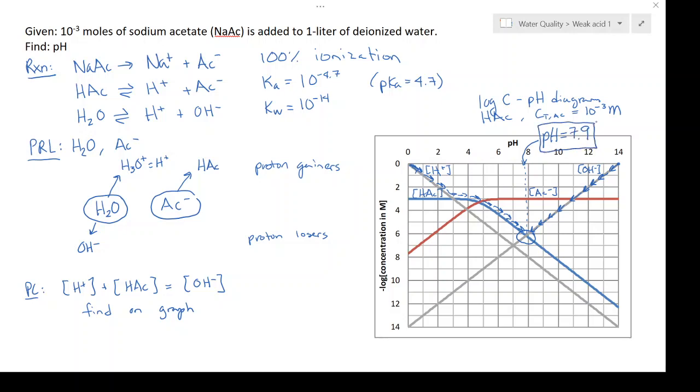So you can see using the graphing solution, we're able to determine the pH of a 10 to the minus 3 moles per liter solution of sodium acetate.